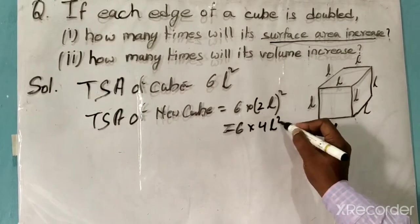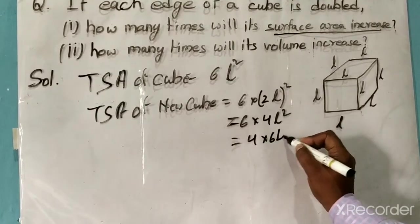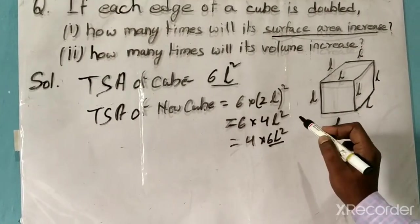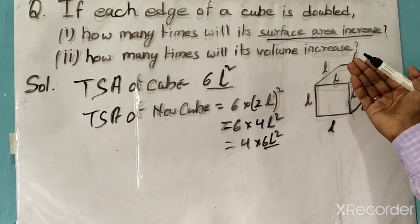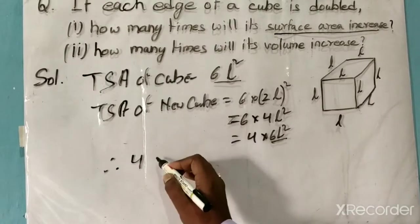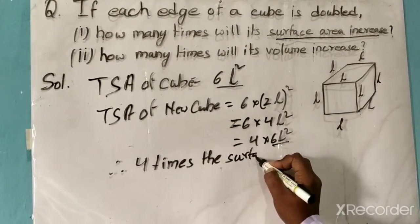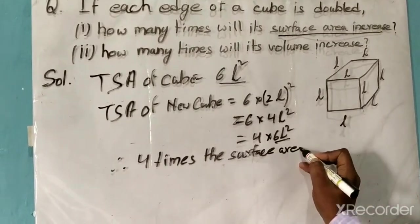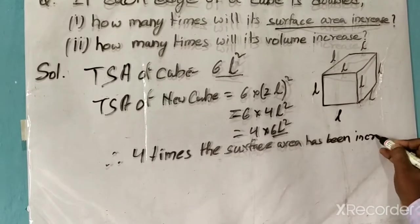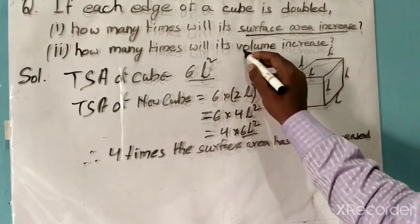Since the edge has been doubled to 2L, squaring gives 4L squared. So the new total surface area becomes 6 into 4L squared, which we can write as 4 times 6L squared. Since 6L squared is the original surface area, the surface area has increased 4 times.